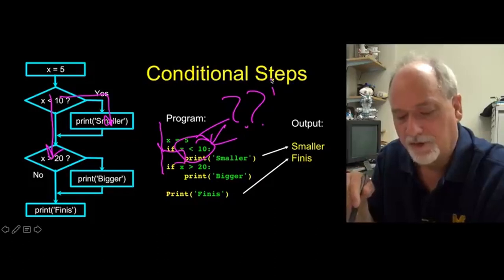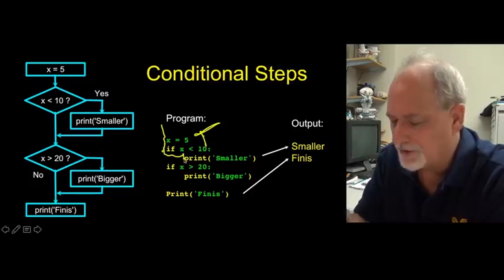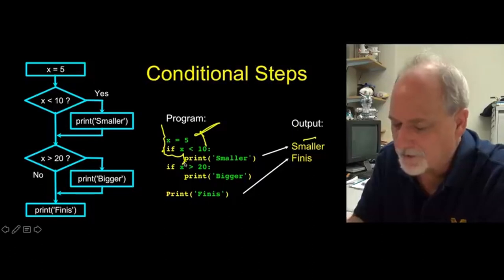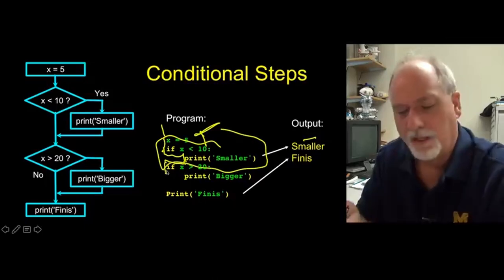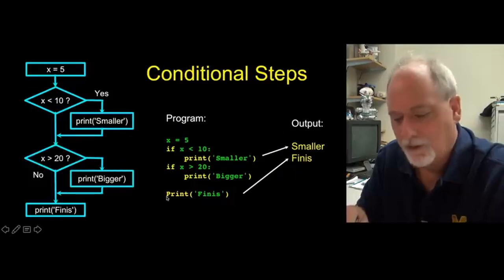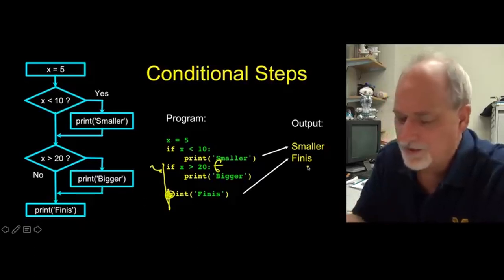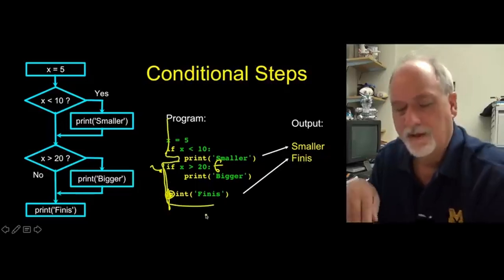Now if you look at this code, it's pretty obvious what's going on. It comes down, x is five. If x is less than 10, that's true, so it runs this code and prints out smaller. And then it comes back here, it de-indents the next basic sequential. This ends up being kind of a block. If x is greater than 20, this turns out to be false because x is five, and so it skips this. So the bigger never comes out, and then it continues on and prints finis. So it comes in, runs this, skips this, and then finishes.